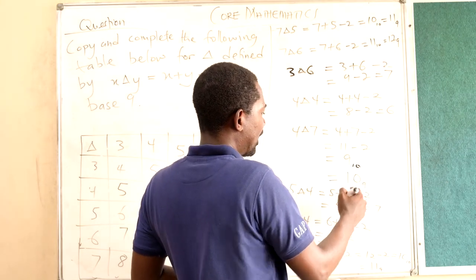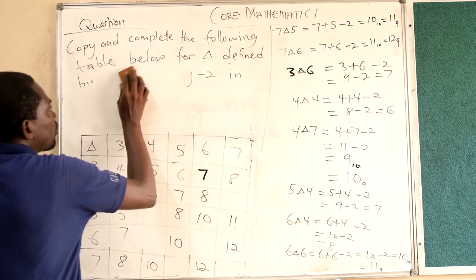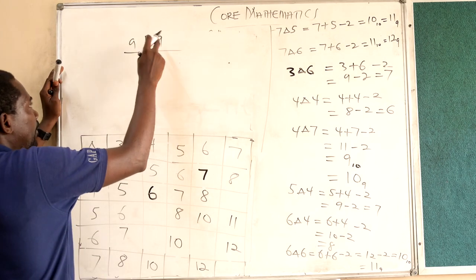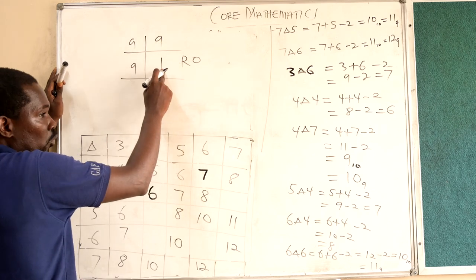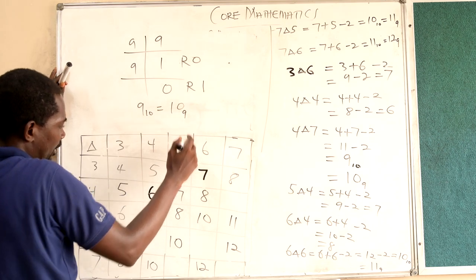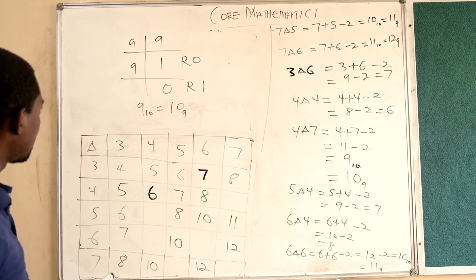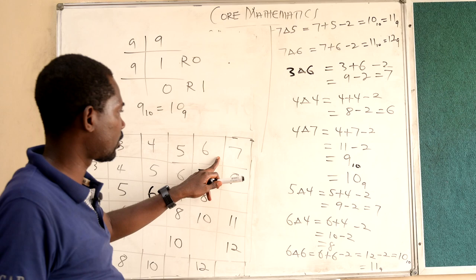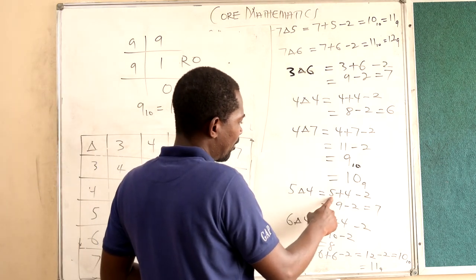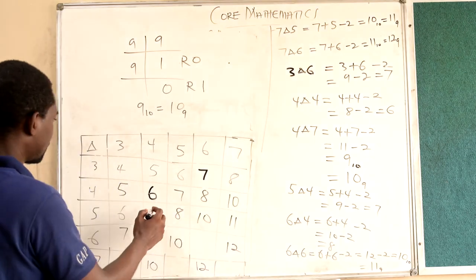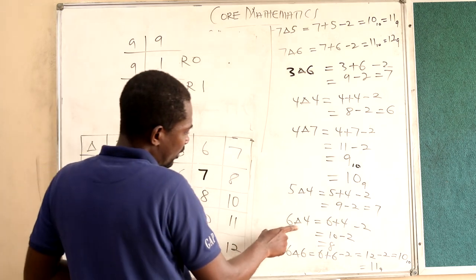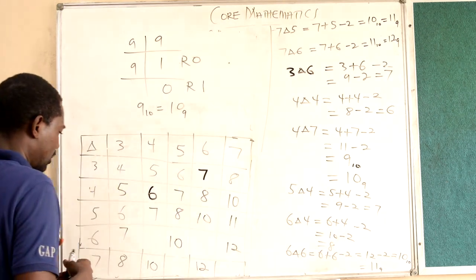Since we are working in base 9, 9 in base 9 is written as 1 0. So 4 triangle 7 gives us 1 0 in base 9. Now 5 triangle 4: 5 plus 4 minus 2 is 7. So 5 triangle 4 is 7. Now 6 triangle 4: 6 plus 4 minus 2 is 8. 8 is the same in base 9, so 6 triangle 4 is 8.